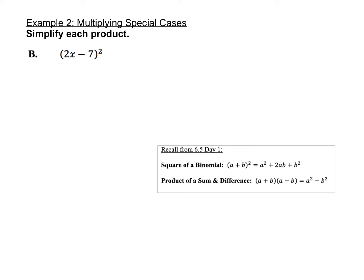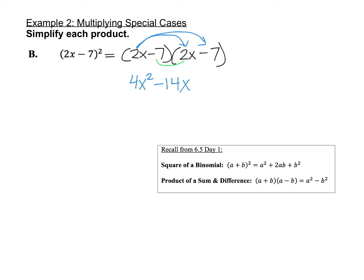Now let's look at a square of a binomial. Remember that (2x − 7) squared just means (2x − 7) times (2x − 7), so without knowing the special case formula, we could just use the FOIL method. Let's FOIL it out first: 2x times 2x is 4x squared, 2x times negative 7 is negative 14x, negative 7 times 2x is negative 14x, and negative 7 times negative 7 is positive 49. Combining like terms: negative 14x and negative 14x add to negative 28x. So the product is 4x squared minus 28x plus 49.